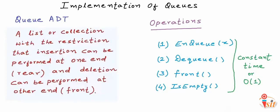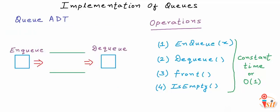In this lesson, we are going to discuss possible implementations of Queue. A Queue is a list or collection with the constraint that insertion can be performed at one end — called the rear or tail of the Queue — and deletion can be performed at the other end — called the front or head of the Queue. An insertion in a Queue is called an enqueue operation, and a deletion is called a dequeue operation.